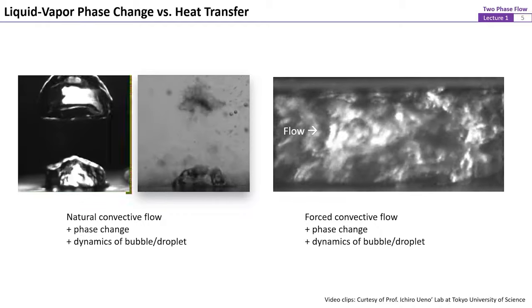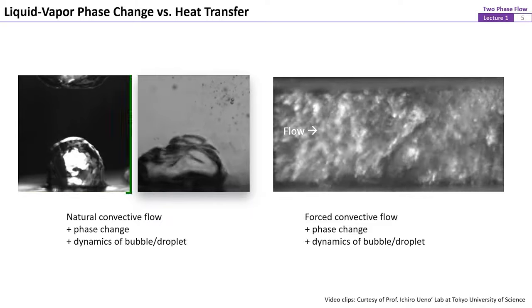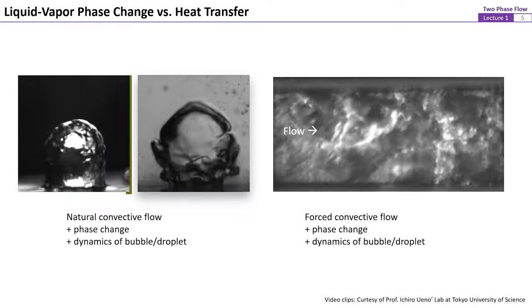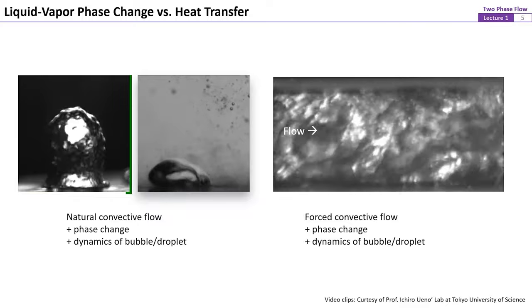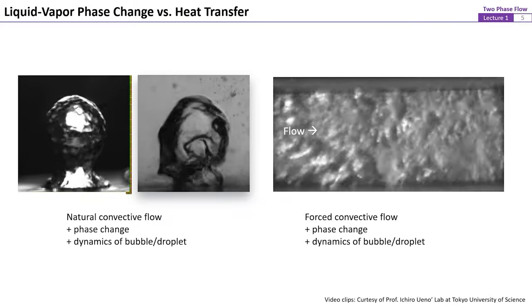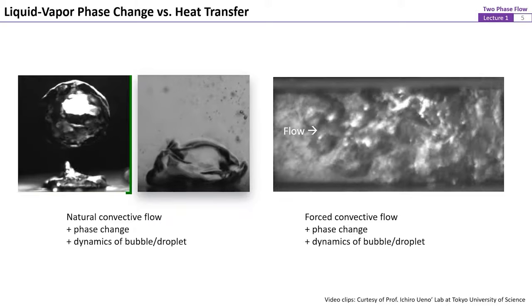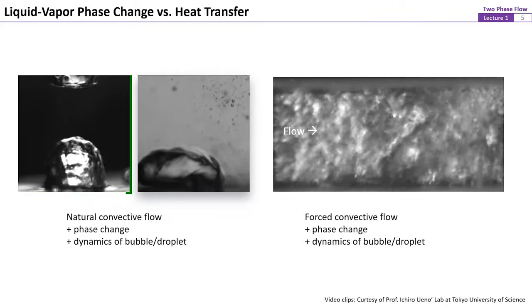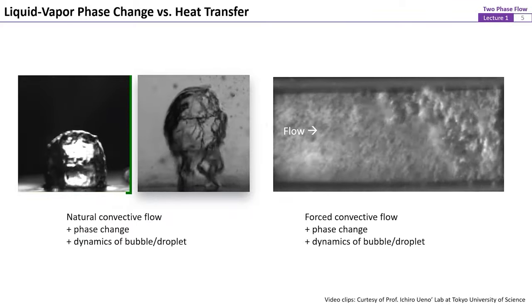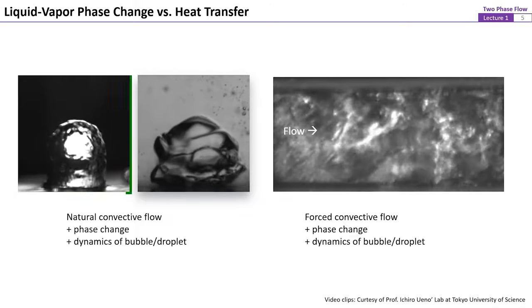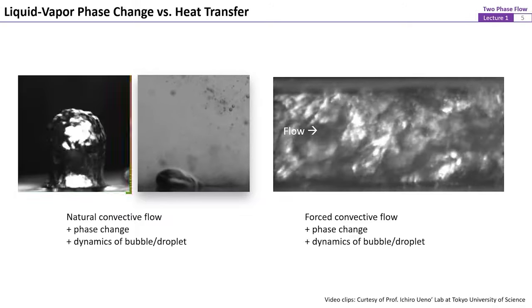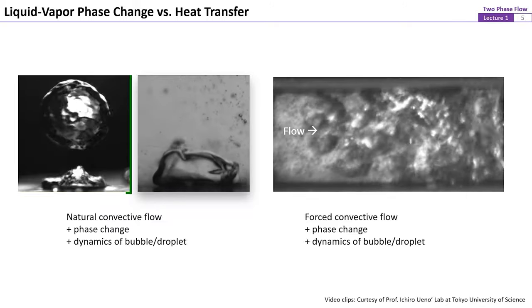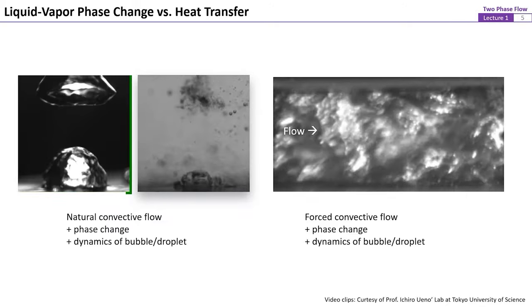When talking about liquid-vapor phase change phenomena, perhaps the first impression would be the boiling and condensation of water. The two videos on the left show vapor bubble formation in extensive liquid environments. In one case, the bubble keeps floating upward due to buoyancy after departing from the heated surface, but in the other case, the bubble shrinks and collapses rapidly.